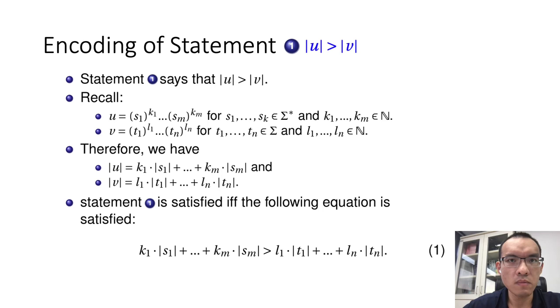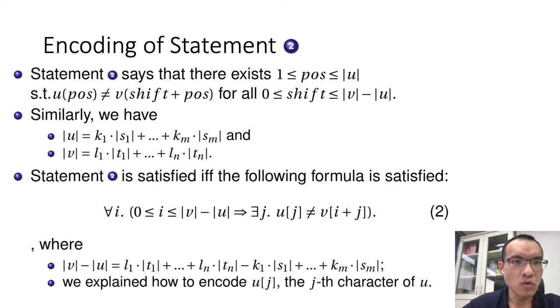Now we show the encoding of statement 2, which says that for all possible shifts, there exists a position of dismatch between u and v. We know how to encode the length of u and v after flattening. And now we know that statement 2 is satisfied if and only if the following formula is satisfied. It says that for all possible shift positions, there exists one dismatch position between u and v.